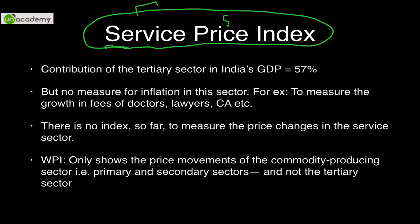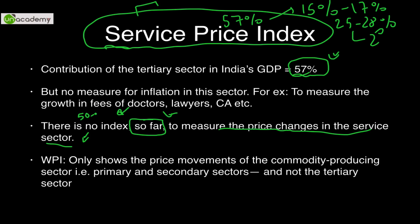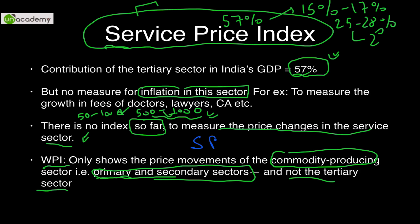The Service Price Index covers a major gap. Services contribute almost 57% of India's GDP, while agriculture contributes roughly 15-17% and industry 25-28%. Yet there is currently no index to measure price changes in the service sector. For example, doctor consultation fees have risen from ₹50-100 to ₹500-1000. Lawyers, CAs, the hospitality industry — none of these are tracked. WPI only includes primary and secondary sectors and does not cover the tertiary sector.